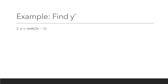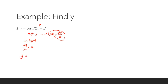The next example is: find y prime where y equals hyperbolic cosine of (2x minus 1). Here u equals 2x minus 1. The derivative of hyperbolic cosine u is hyperbolic sine u times du/dx. The derivative of u with respect to x is 2. So rewriting, the derivative gives us hyperbolic sine of (2x minus 1) times 2, giving a final answer of 2 hyperbolic sine of (2x minus 1).